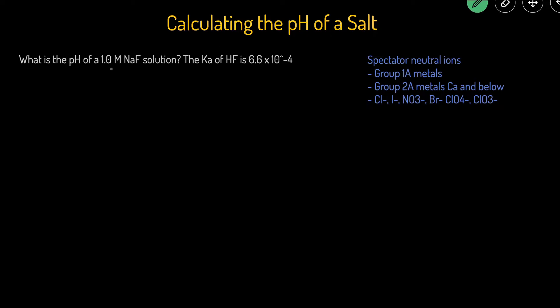This question reads, what is the pH of 1.0 molar sodium fluoride solution? We're also given the Ka of HF is equal to 6.6 times 10 to negative 4.